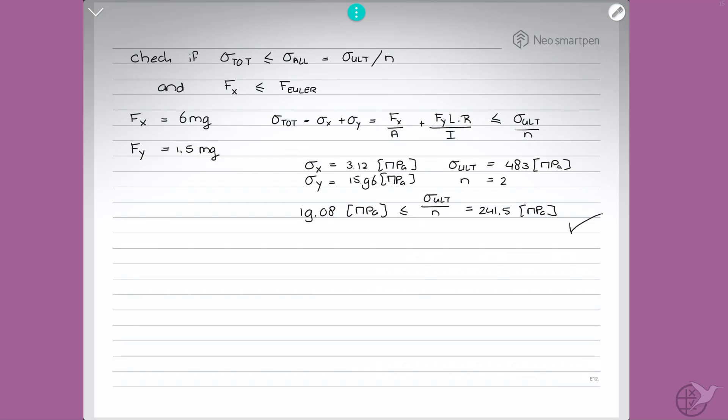Now, for buckling, we must check if Fx is smaller or equal than Feuler. Now, we've known what Fx is. That is 6Mg. So that must be smaller than π squared EI over 4L squared. And this is, if you write all this nicely out, π cubed E R cubed T over 4L squared.